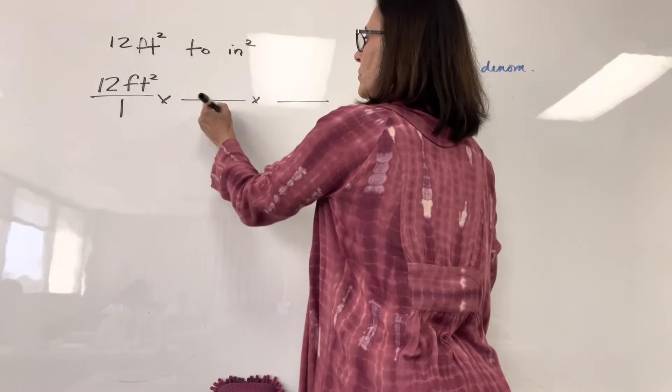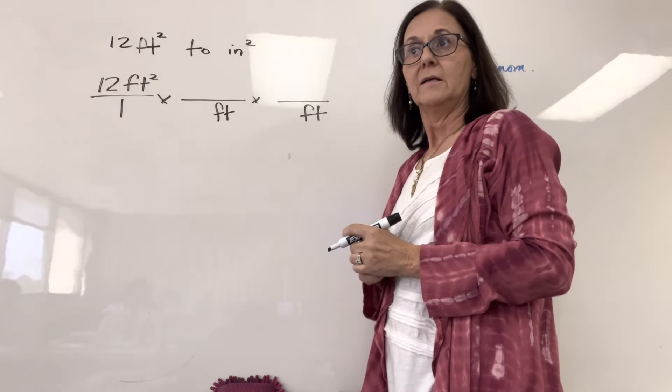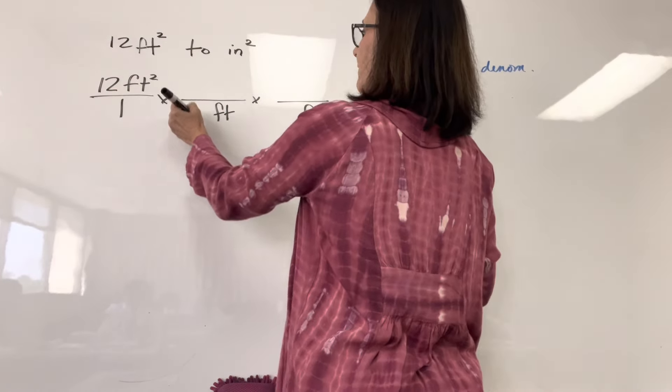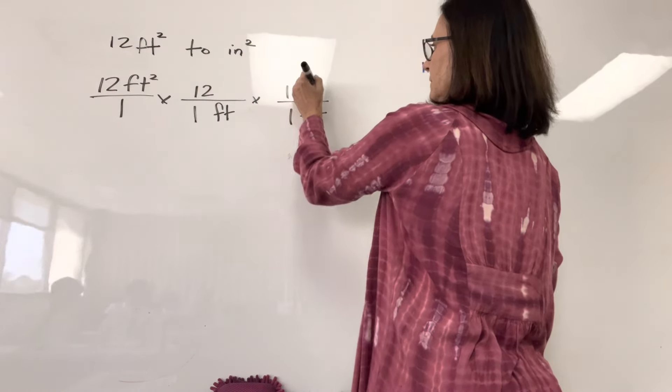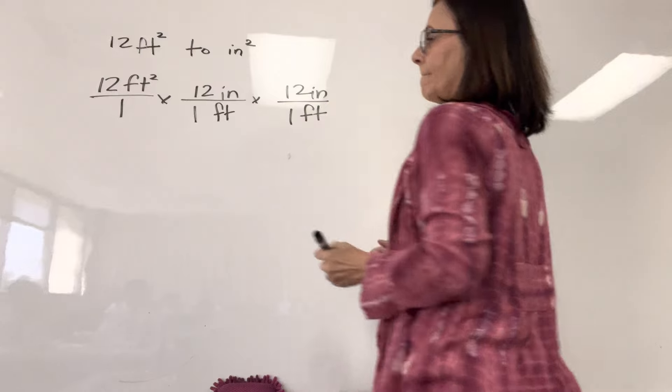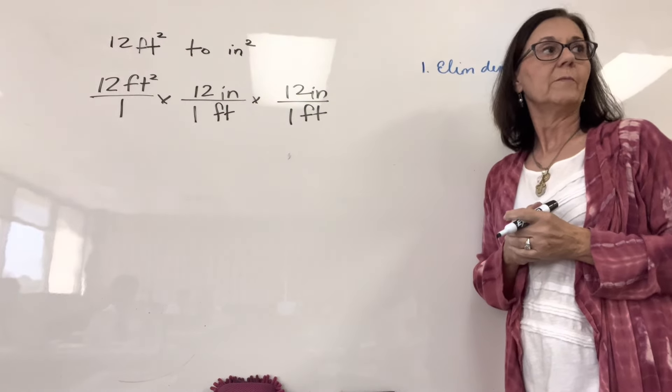You need two unit multipliers. We need two over 12 inches. Right, so one foot is 12 inches. Okay, look at this guys. You don't have to multiply all this out.